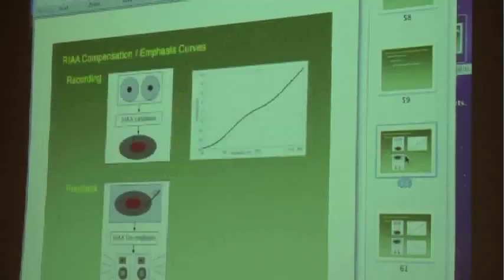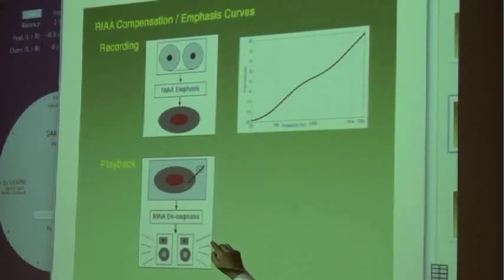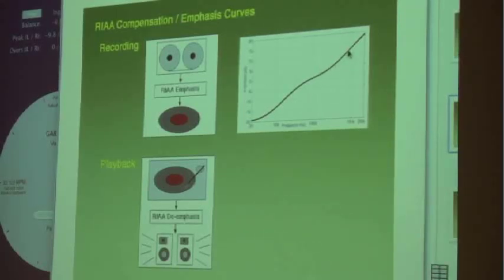If you don't know what the RIAA curve is: it comes about in the manufacturing process of LPs. It's a special equalization curve that allows engineers to squeeze more music onto the disc. This has always been used since the dawn of flat-platter vinyl. Rather than dump audio onto the lacquer flat, we apply RIAA emphasis — which cuts the bass frequencies and boosts the treble. This allows grooves to be squeezed tighter together, because low-frequency modulations cause the stylus to do a lot of lateral excursion.